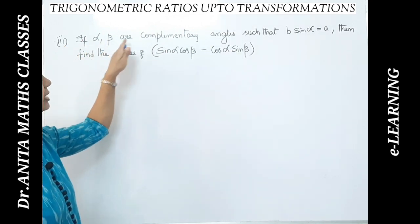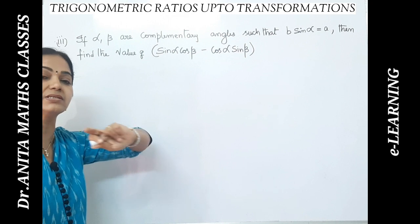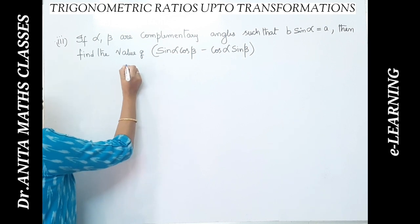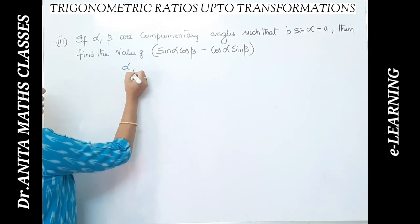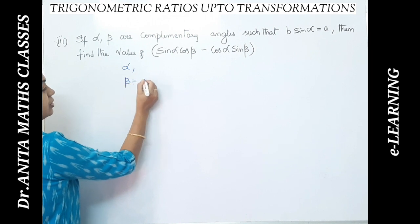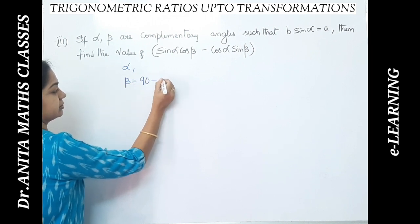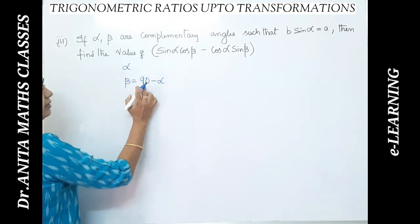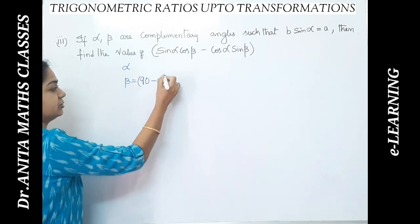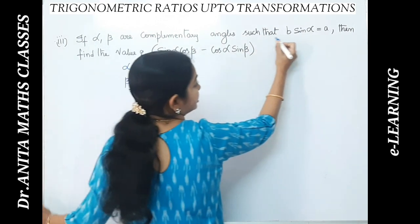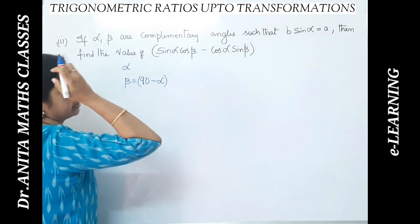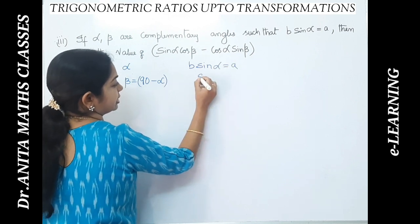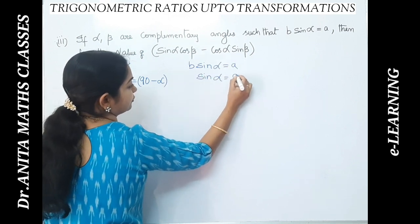Next: if α and β are complementary angles — meaning their sum equals 90° — and B sinα = A, find the value of sinα cosβ − cosα sinβ. Since they are complementary, if one angle is α then β = 90° − α. From B sinα = A, we get sinα = A/B.